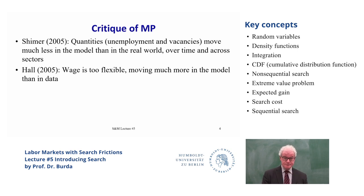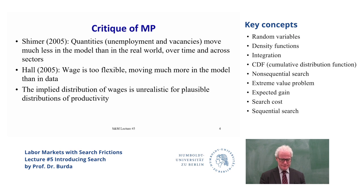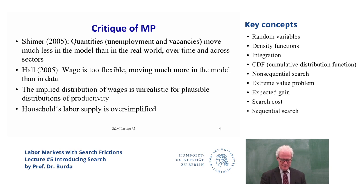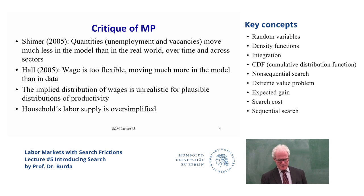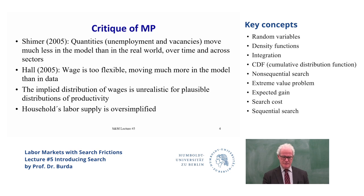Many have found this solution to be a bit ad-hoc and somewhat contrived. There are other bargaining models that have also led to less volatility of wages that can solve the problem. Another critique of Mortensen-Pissarides is that the labor supply problem of the household is somewhat simplified because households cannot leave the labor force, but this is easily solved — Pissarides does this in Chapter 7 of his textbook.